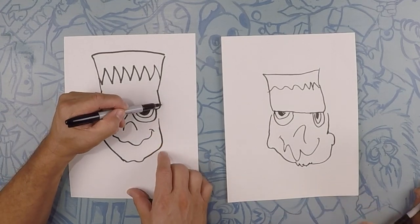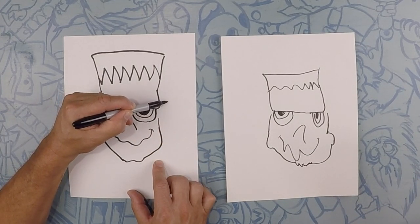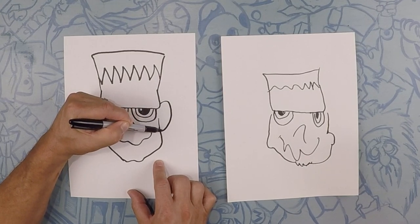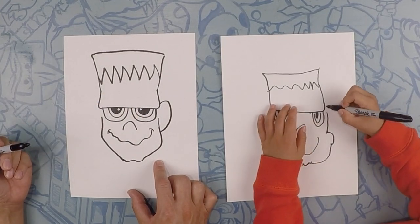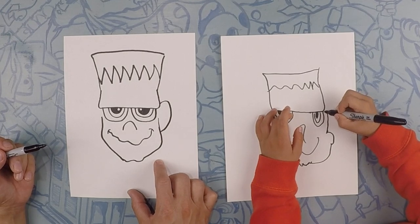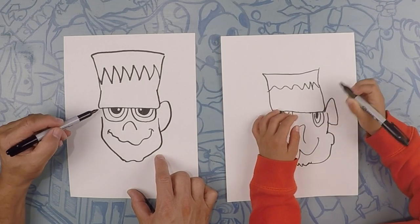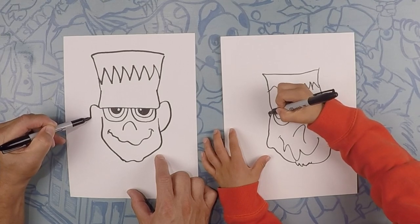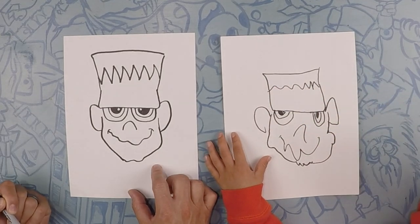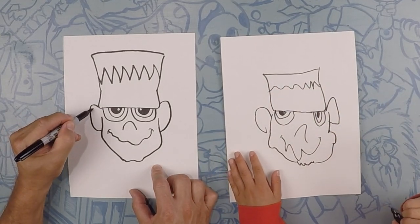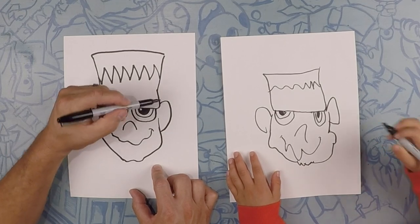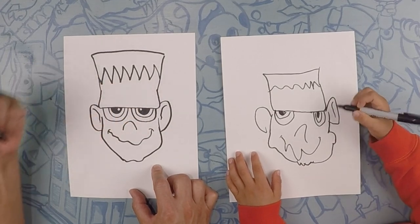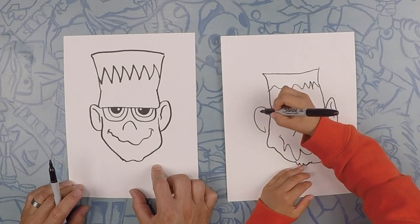So on the side we're gonna do like a backwards letter C and that's gonna be his ear. Oh that's his ear because I can tell. Yep. Because of the way it looks. It could be as big or as small as you want and the same thing on this side. Another ear. Perfect. So inside the ear do like a squiggle so that's the inside of the ear like that. Perfect.